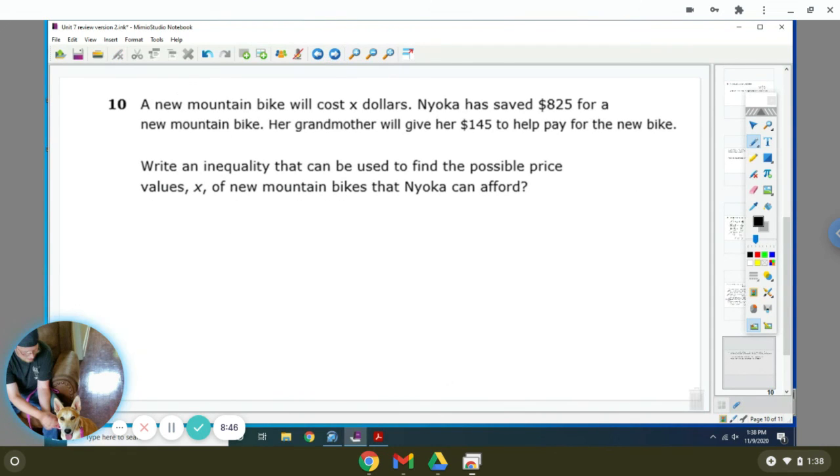A new mountain bike will cost X dollars. Nyoko has saved $825 for a new mountain bike. Her grandmother will give her $145 to help pay for the new bike. Ride and quality to find the possible price of the new mountain bike she can afford. So Nyoko saved $825 for a new mountain bike. And her grandmother will give her $125 to help pay for the new mountain, for the new bike. So ride and quality they can use to find the possible price values of a new mountain bike that Nyoko can afford.